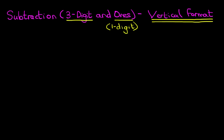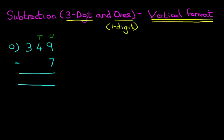Let's begin with our first example. We're going to start with a nice easy one. What is 349 minus 7? I like to label the columns because it's easier to explain. We have the units, tens, and hundreds. We are ready to go ahead and do the subtraction, and as always, we start on the right-hand side first.